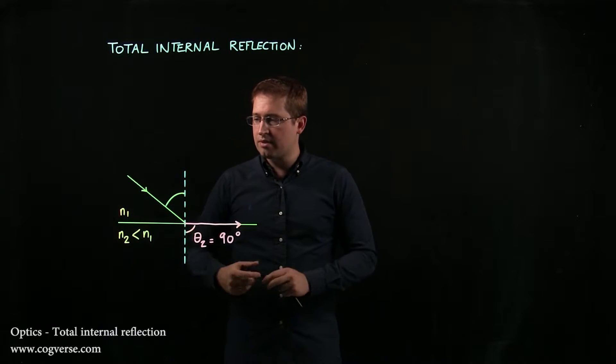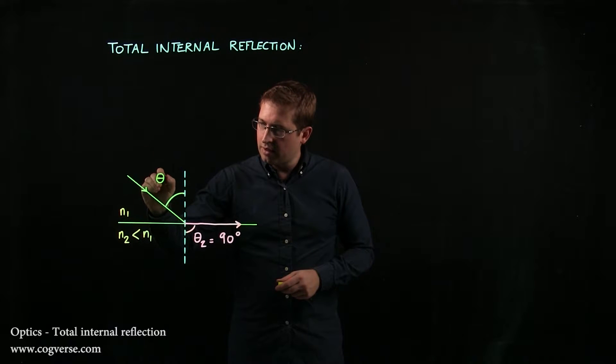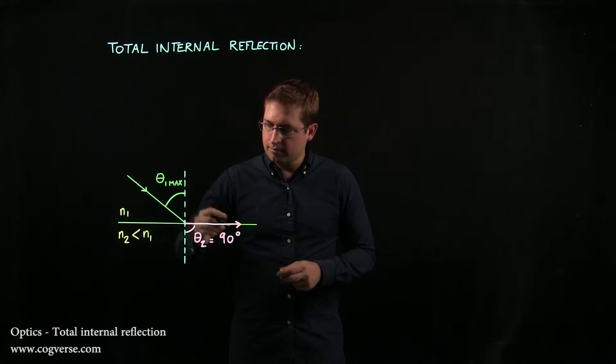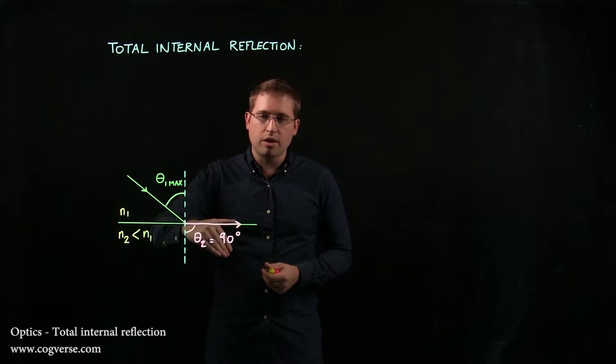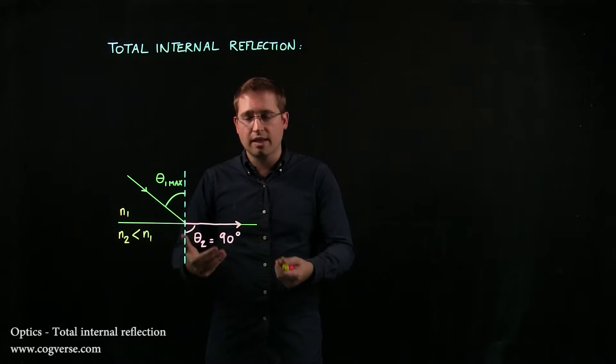And this happens, in fact, for an angle theta 1 max, because if the angle is smaller, then theta 2 will also be smaller. It will still bend away from the normal, but less.